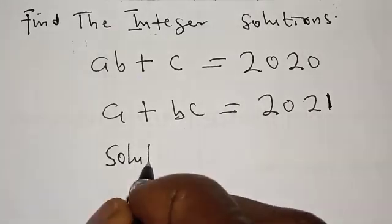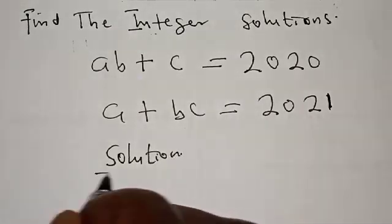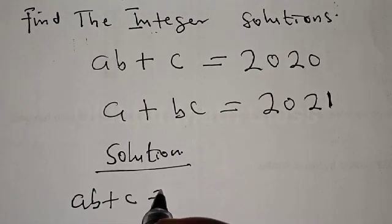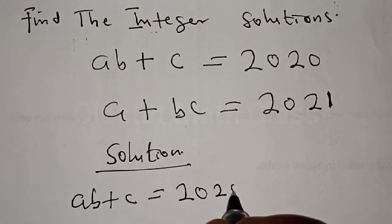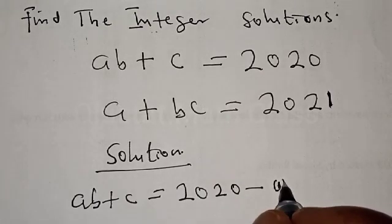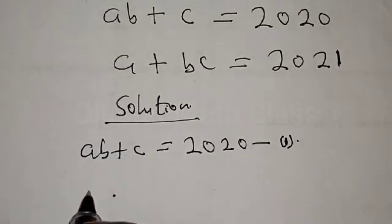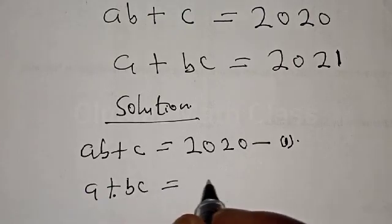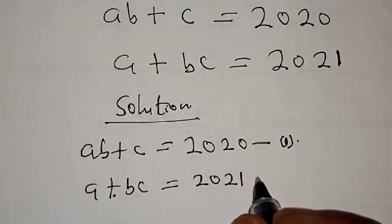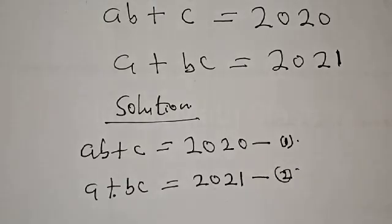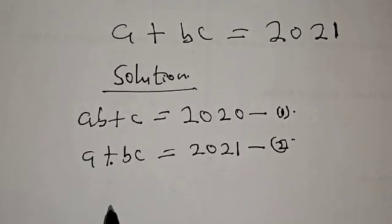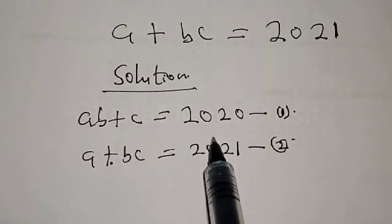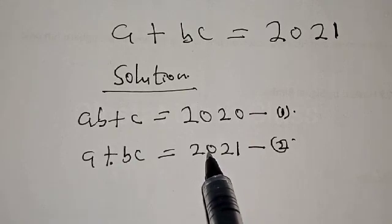Solution. We have AB plus C equal to 2020 — let's call this equation 1. Then we have A plus BC equal to 2021 — let's call this equation 2. What do we do next? Let's subtract equation 1 from equation 2. The essence of this is that the right-hand side is going to be equal to 1.